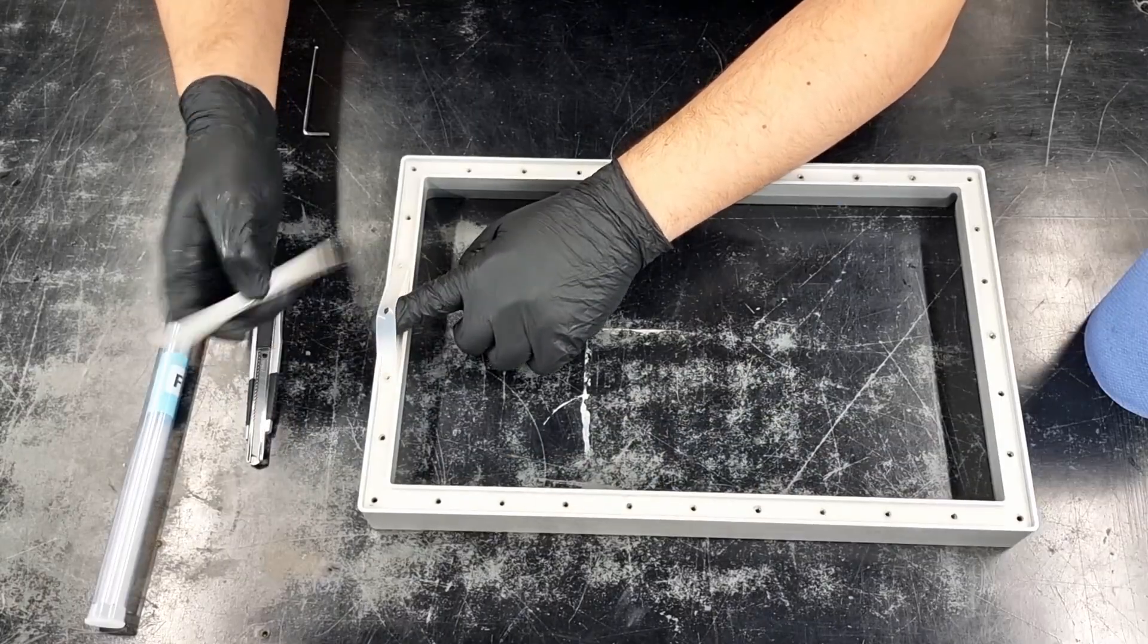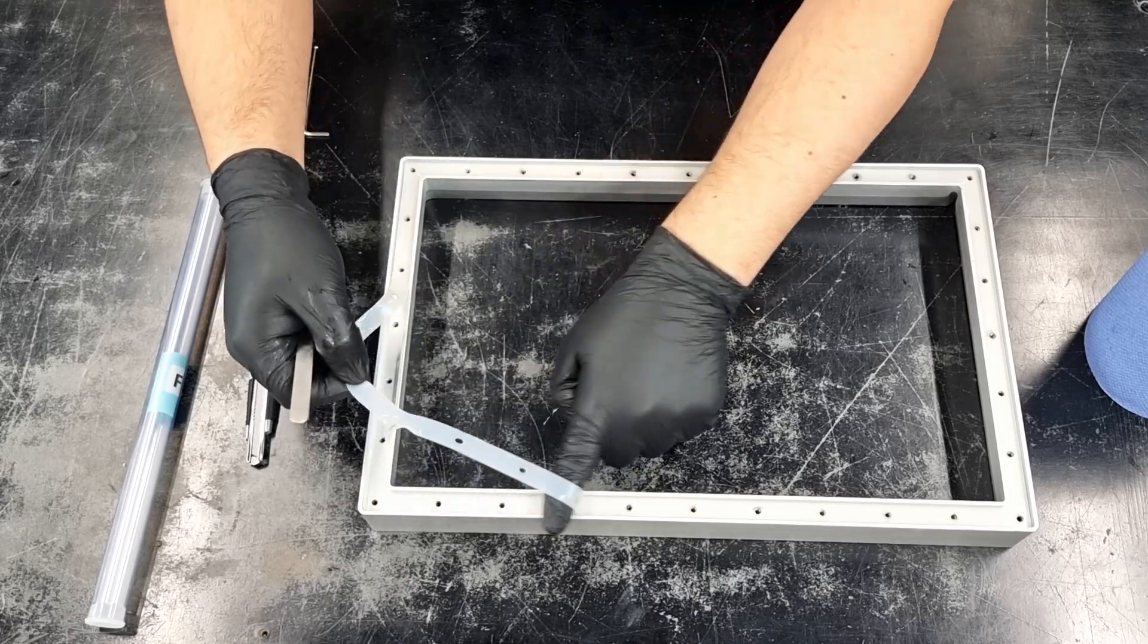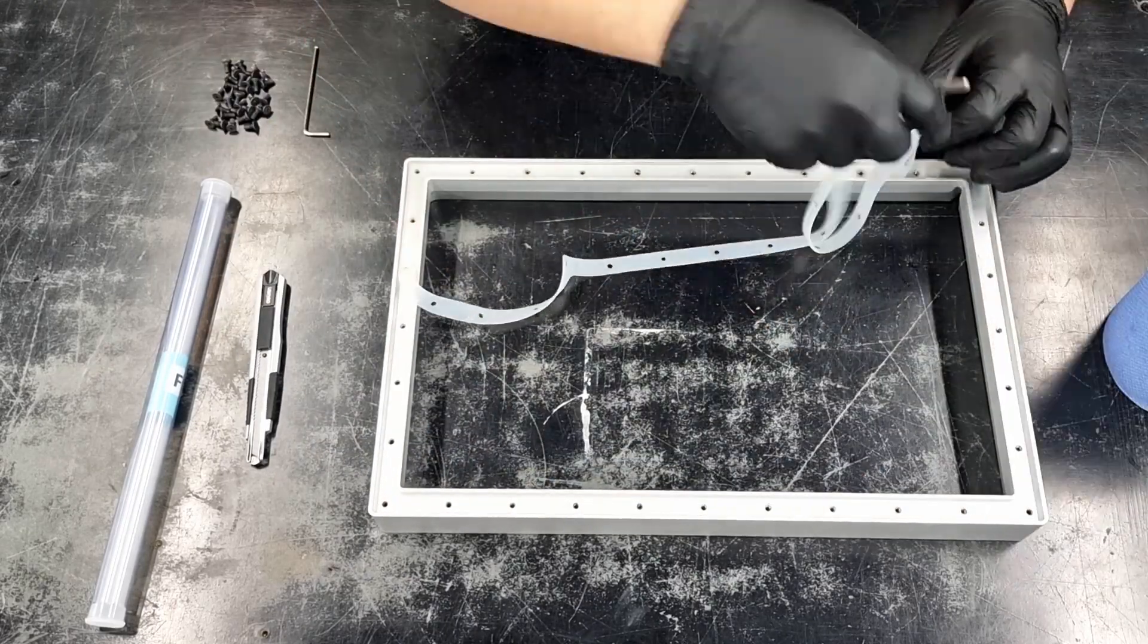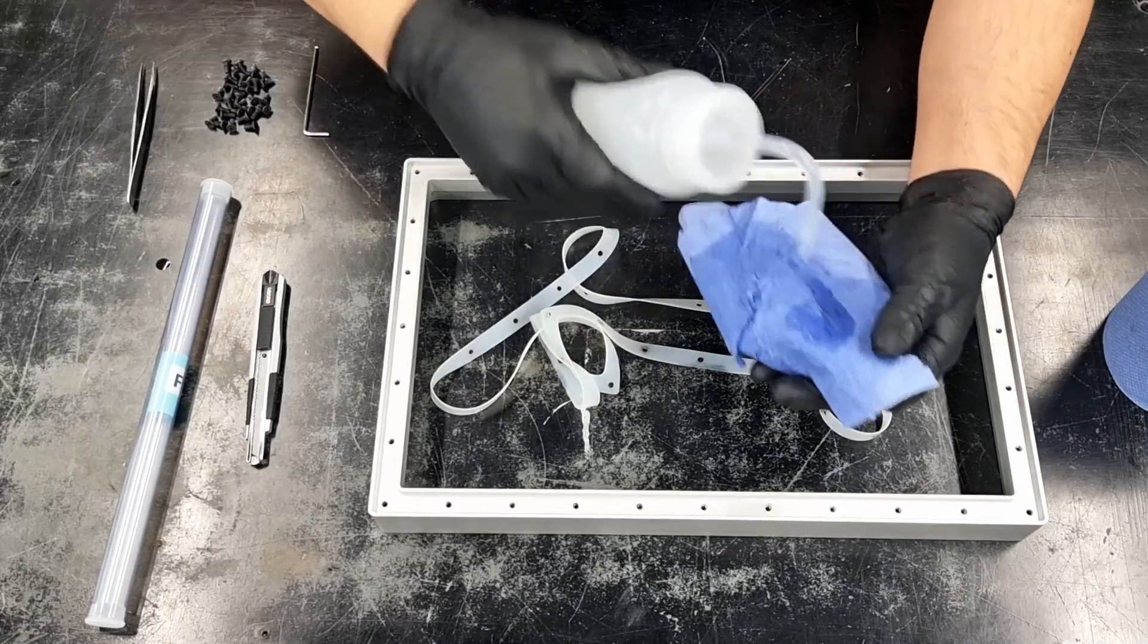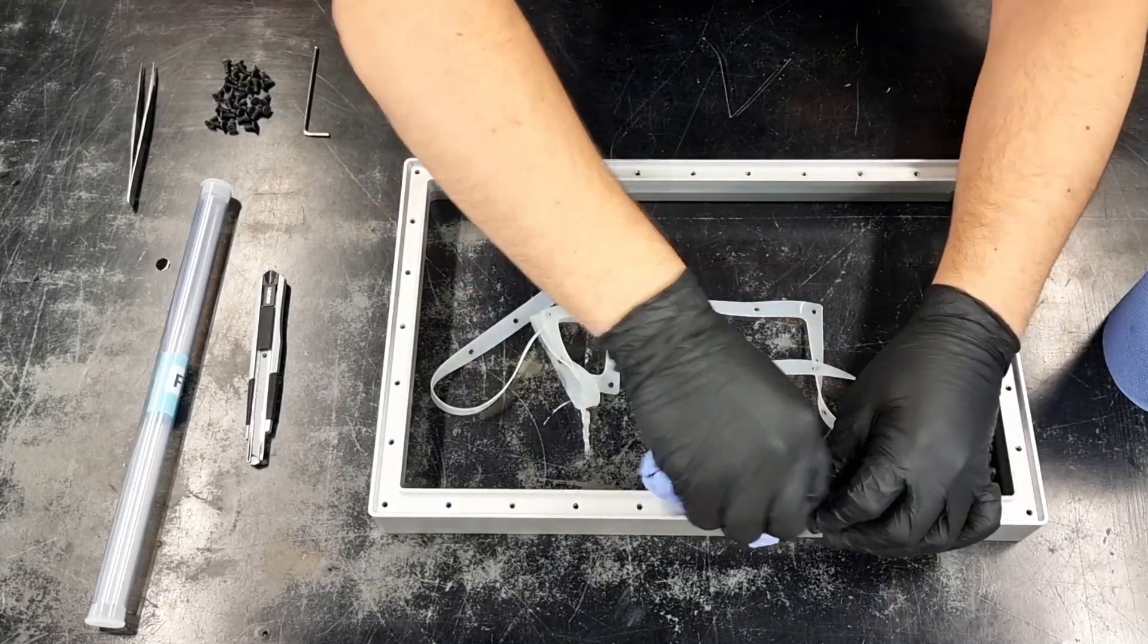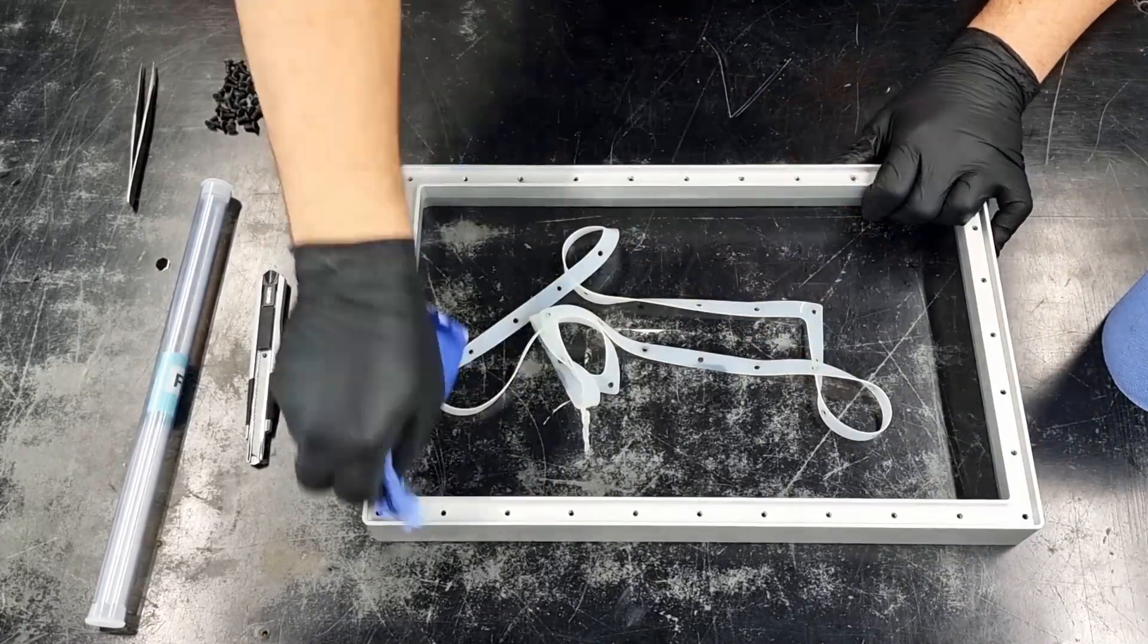After that you will notice that there is a gasket inside which prevents leaking of the resin and holds the two parts of the vat together. We give it a good wash with IPA to remove all the resin from previous printings.